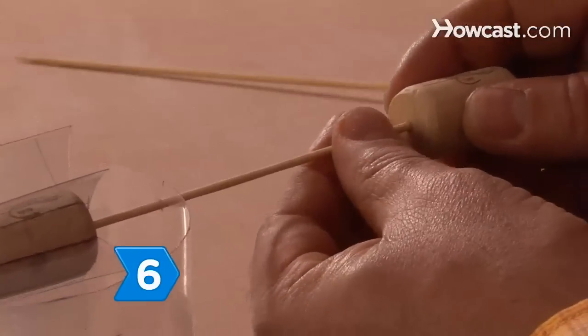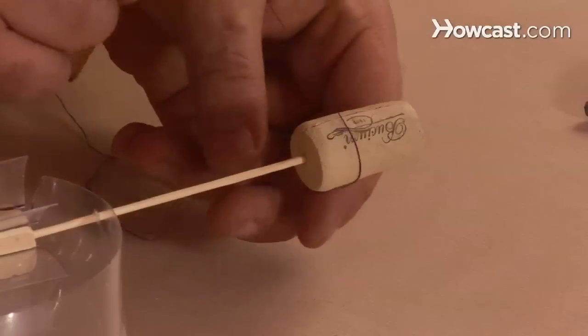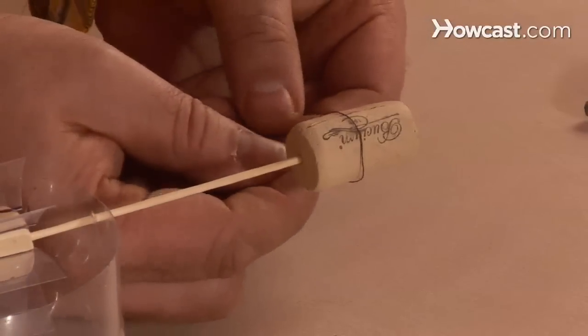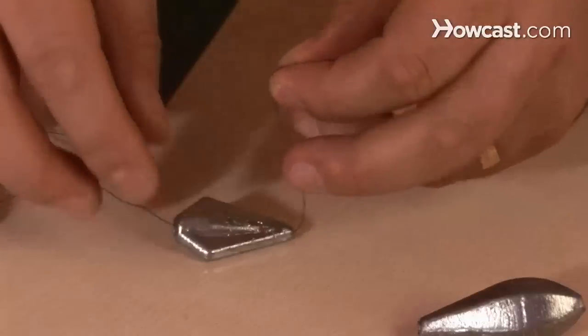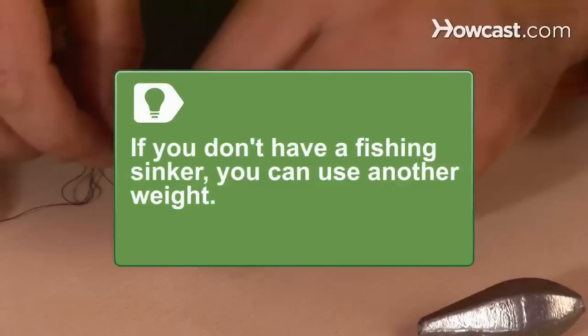Step 6. Push the other cork firmly onto the end of one of the skewers and tie one end of the length of thread around the cork. Then tie the loose end of the thread to a fishing sinker. If you don't have a fishing sinker, you can use another weight.